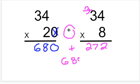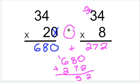680 plus 272. 0 plus 2 is 2. 8 plus 7 is 15. Carry the 1. 6 plus 2 is 8, plus 1 is 9. So we get our same answer again of 952. And this is how you multiply two digit by two digit numbers.